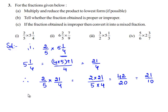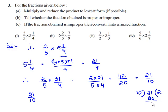Now we need to convert the improper fraction 21/10 into its mixed fraction. So, we divide 21 by 10. 10 times 2 gives 20, and the remainder left over is 1. Therefore, the mixed fraction form of 21/10 is 2 1/10.